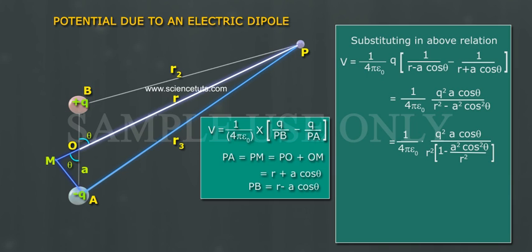V is equal to 1 minus A cos theta by R square of 1 minus A square cos theta by R square. When R much greater than A, V is equal to 1 by 4 pi epsilon naught into P cos theta by R square.